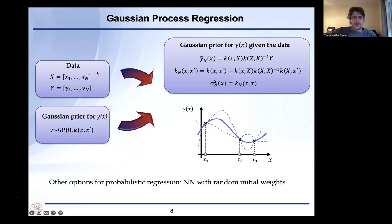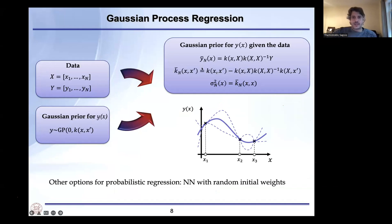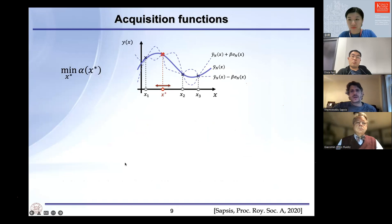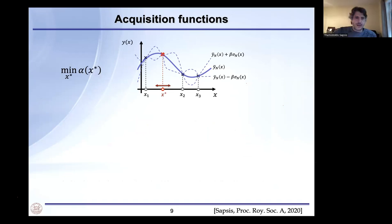For Gaussian process regression: we start with data, assume a Gaussian prior on the unknown function, and condition on the data to obtain both a mean interpolator and a posterior variance at each location. We also use ensemble operator neural networks, which I will discuss later. The key element is the acquisition function — a criterion telling us where to sample next.